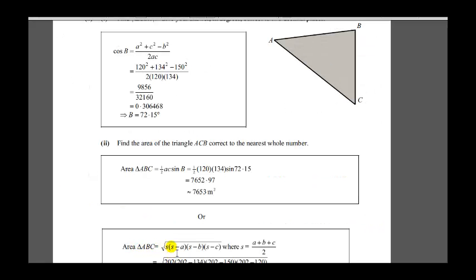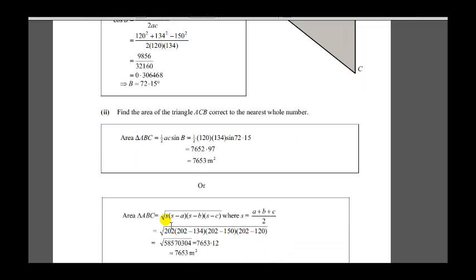Now you could also use this formula here. S is half the perimeter of the triangle. So we add up the three sides and divide by two. So you see we get 202 and we have to take S which is half the perimeter and subtract each of the three sides. 202 minus 134, 202 minus 150 and 202 minus 120. So you see we don't have to use any angle here but we need all three sides for this formula.